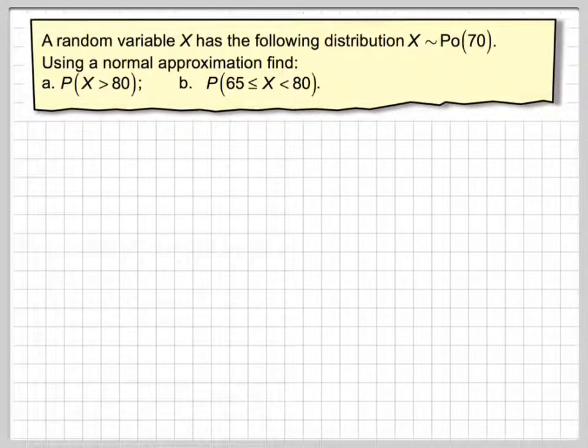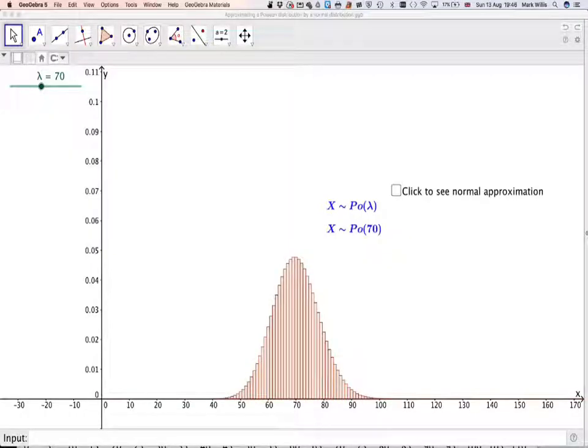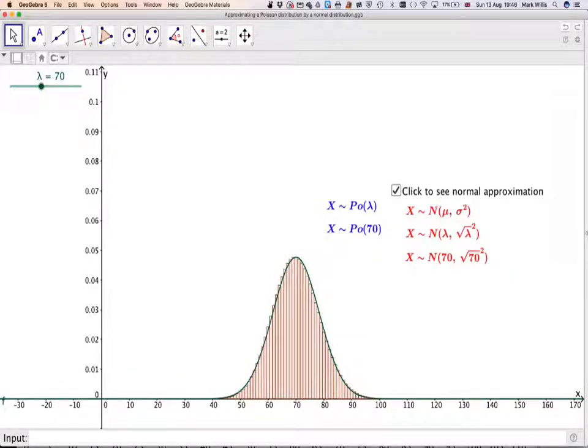Let's have a look at this in GeoGebra first. If we've got a Poisson distribution, here I have a Poisson 70, and because 70 is very large, it involves a lot of calculations using the calculator. If we click here, we can get a normal distribution.